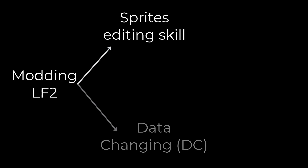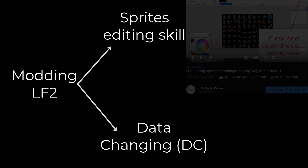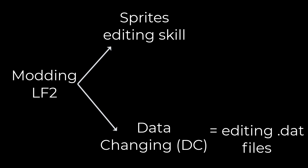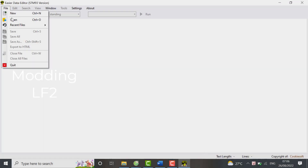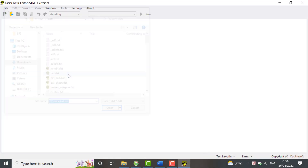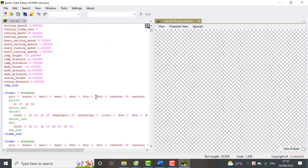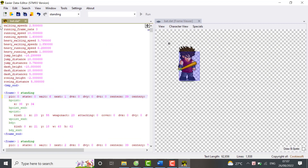In order to make a mod, you need sprite editing skills and data changing, or DC for short. I've already made a video about sprite editing which you can watch here. To be honest, you don't need to know much — just some basic copy, paste, coloring, etc. and you'll be fine. So what is data changing? It's simply editing the .dat files. You open a .dat file with a data changer and you change something. That's called data changing, and that's what you're going to learn in this series.